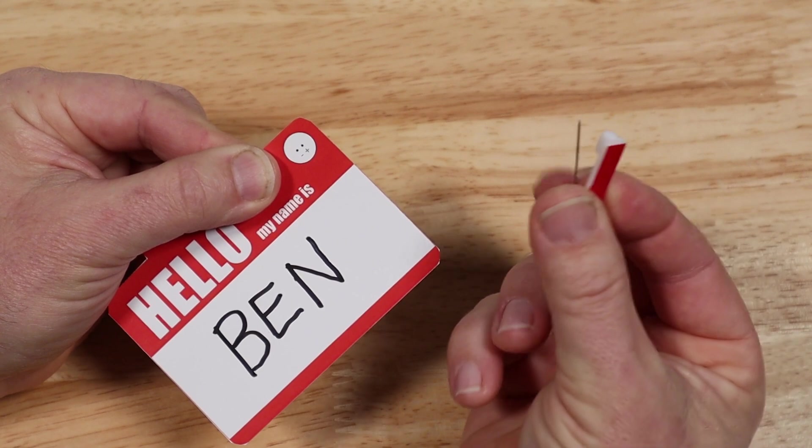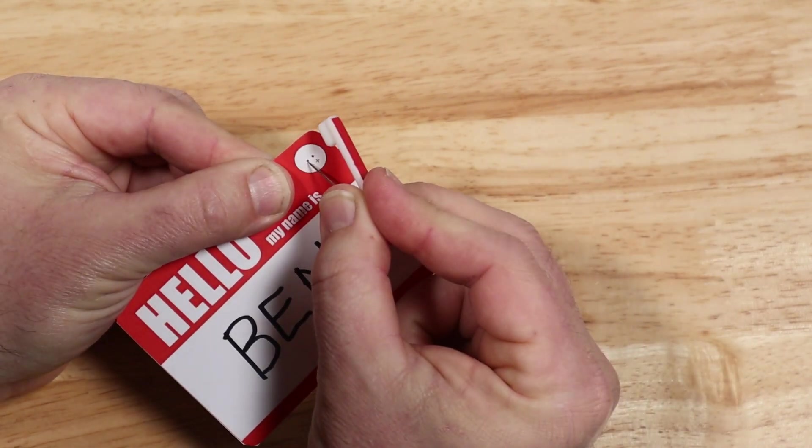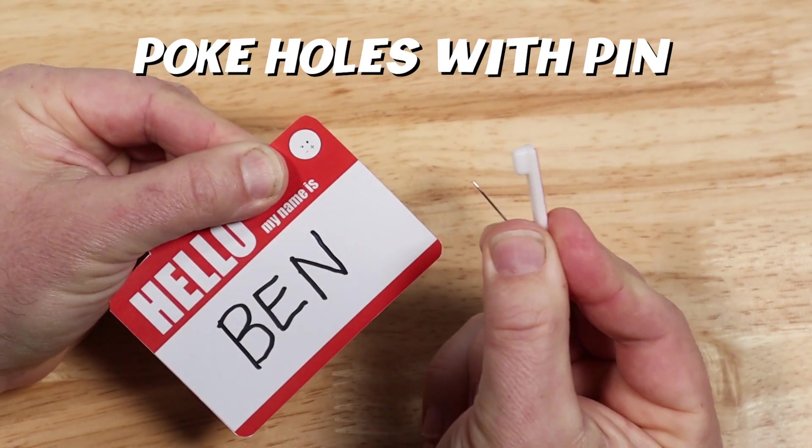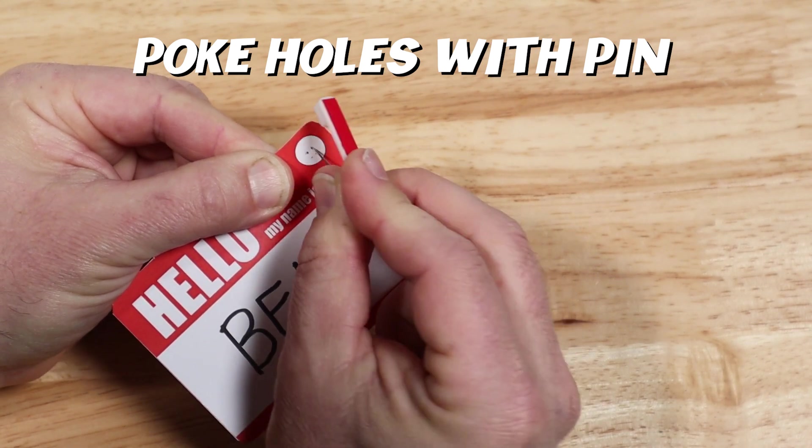Now we're going to poke holes using the pin. Open the pin and poke two holes at the two dots in the upper right corner of the name tag.